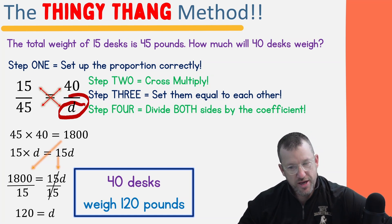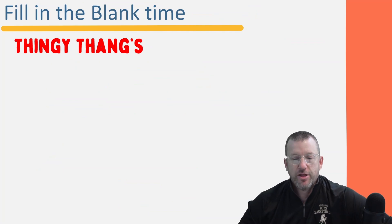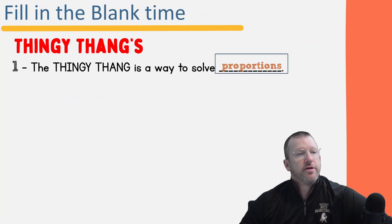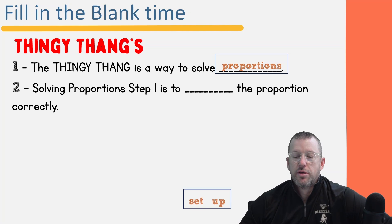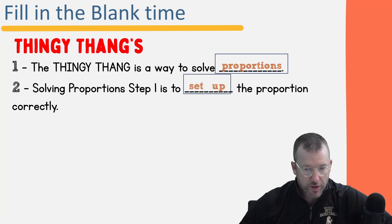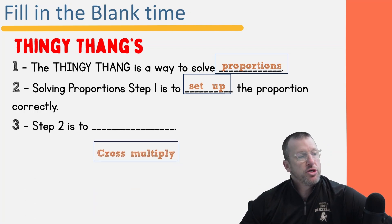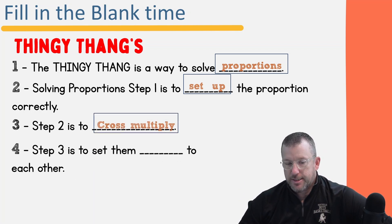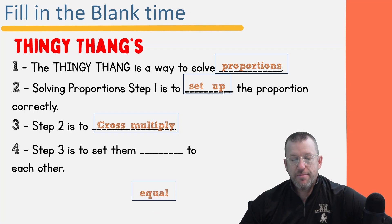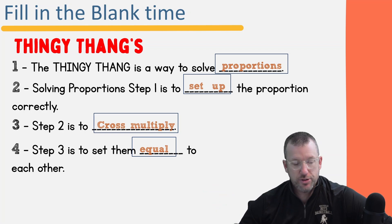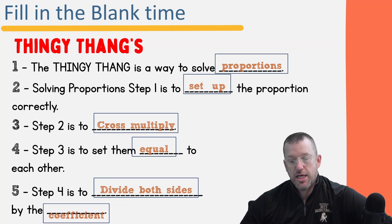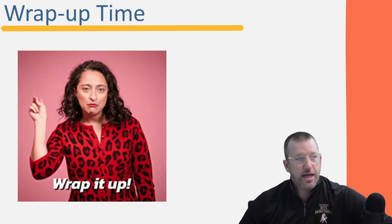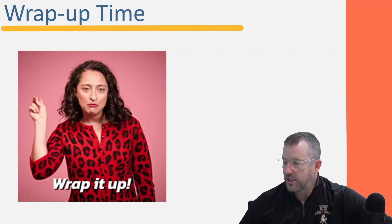The thingy thang is a way to solve proportions. Step one: set up the proportion. Step two: cross multiply. Step three: set the two answers equal to each other. Step four: divide both sides by the coefficient. You're going to thank me — you're probably going to send messages saying this thingy thang is the cat's meow.